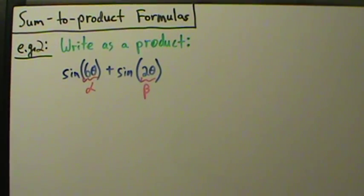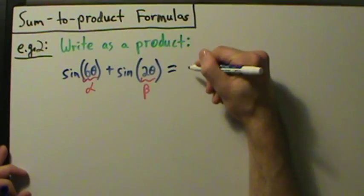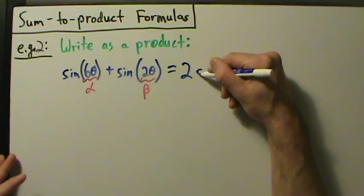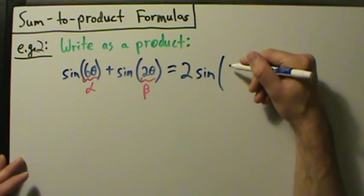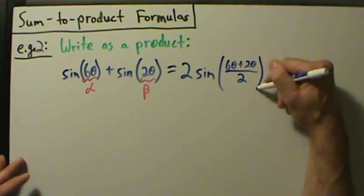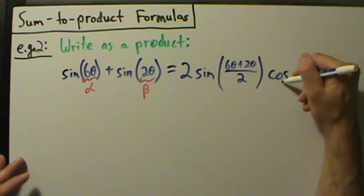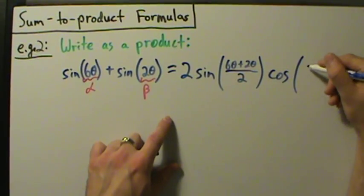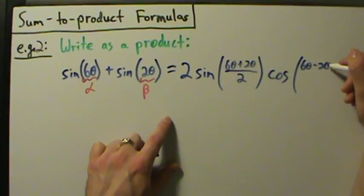So now we're just plugging stuff into that formula. That's pretty much it. This is going to be two times the sine of alpha plus beta, which is six theta plus two theta, all divided by two, times the cosine of alpha minus beta, which is six theta minus two theta, all divided by two.